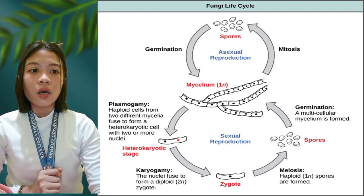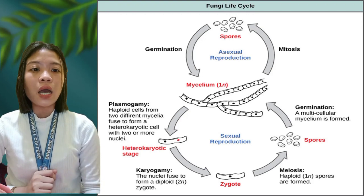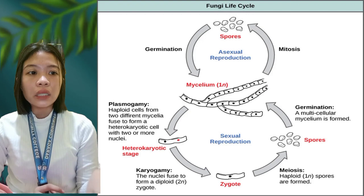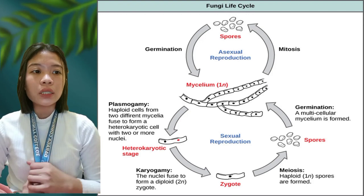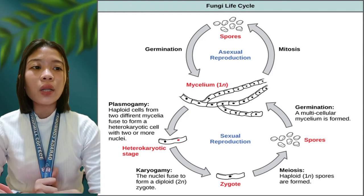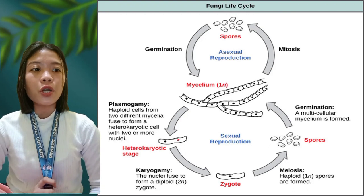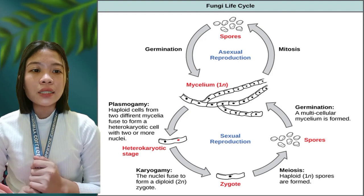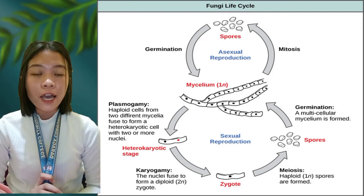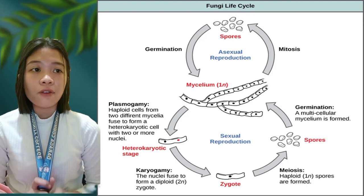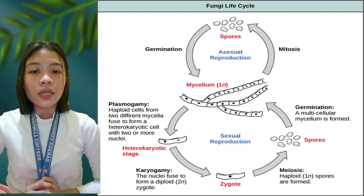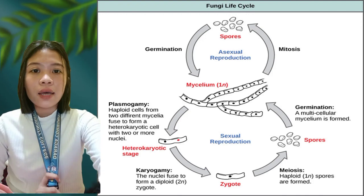The heterokaryotic cell, with two haploid nuclei, will then fuse through a process called karyogamy, going from haploid to diploid, producing one cell with one nucleus known as the zygote. The zygote undergoes meiosis to produce haploid spores. The process of spore formation is also referred to as sporogenesis. Once spores find an environment where they can germinate, they will decide whether to undergo asexual or sexual reproduction depending on the temperature of the environment, and the cycle repeats.